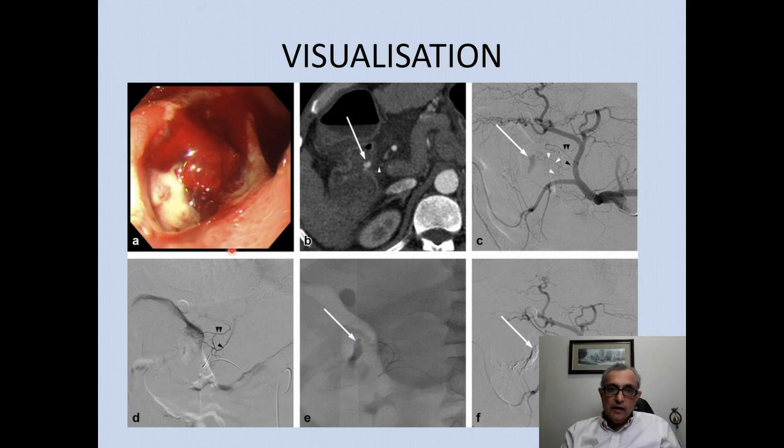Angiography is another tool used frequently. Here is a patient with a bleeding peptic ulcer — you can see the area of bleeding on CT scan. We go through the gastroduodenal artery, identify the site of bleeding, and block it off by injection of glue.